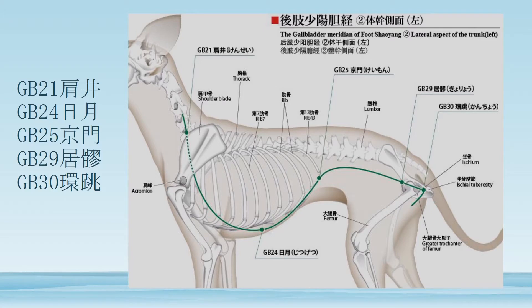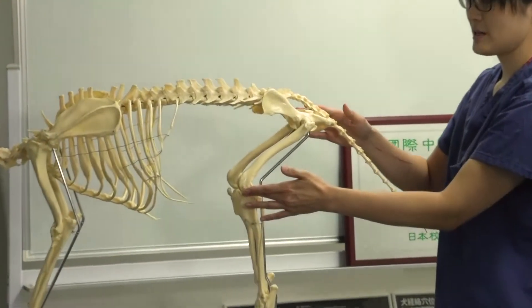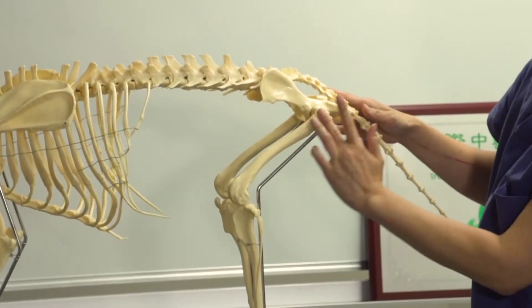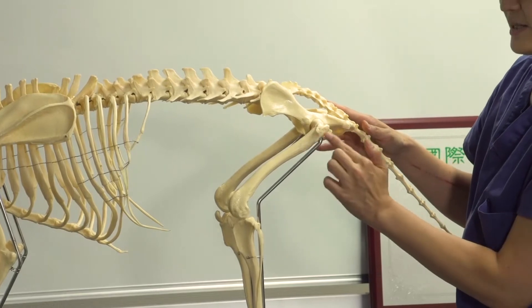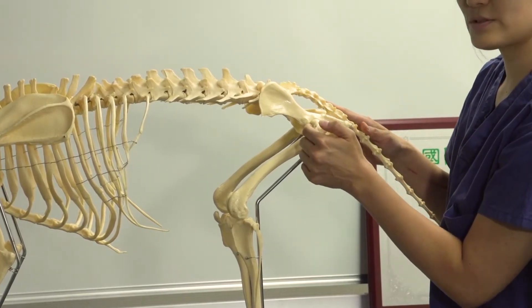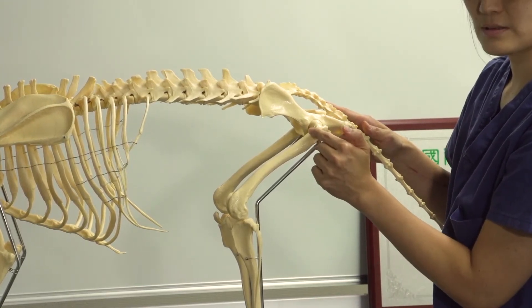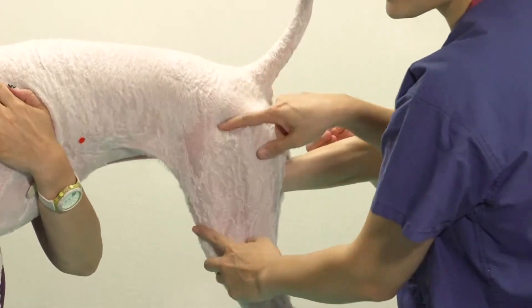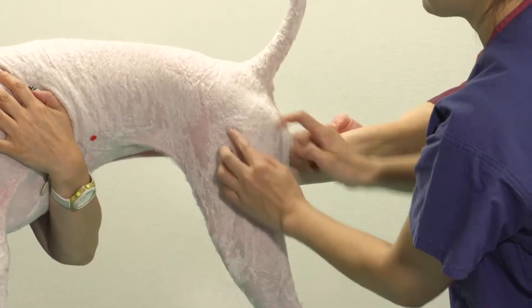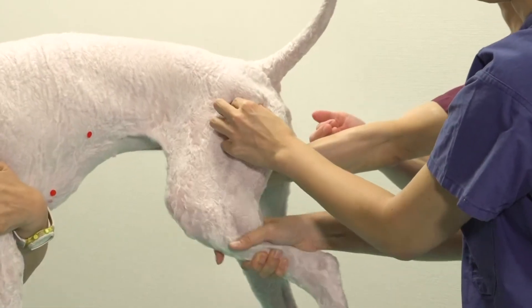GB29 is in the depression cranial to the greater trochanter of the femur.